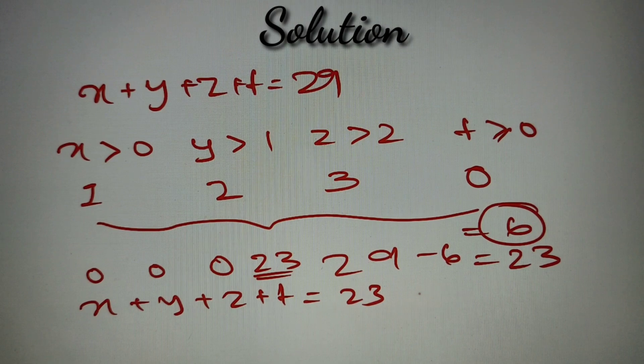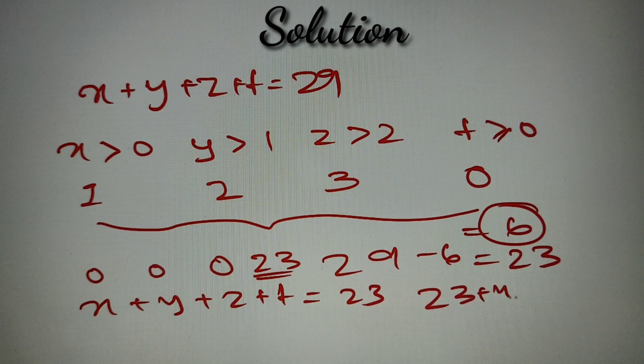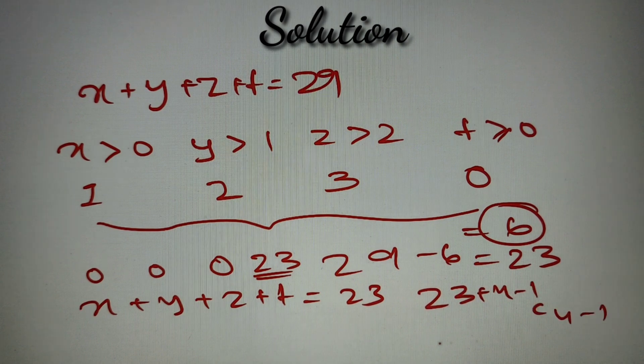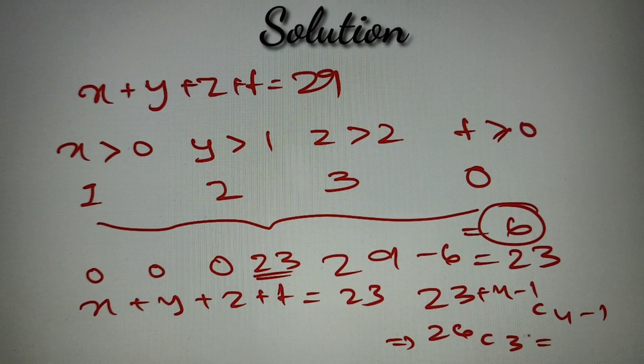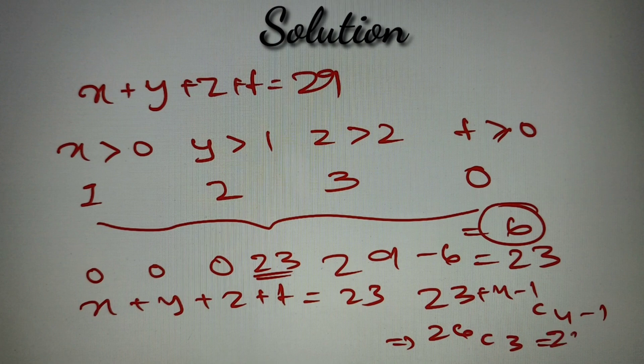So according to that, my answer is n equal to 23 plus 4 minus 1 C 4 minus 1. Now according to this, my value is equal to 26C3. Now if we calculate the value of 26C3, it will come as 2600 and my given answer is 2600, that is option number C.